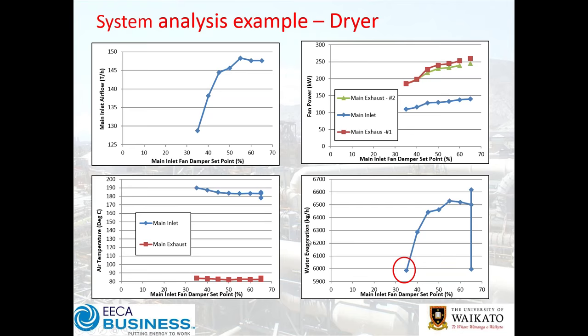The initial set point was 65%. The key driver for the dryer is water evaporation. Starting at around 6 tonnes per hour of water evaporation, we changed a few temperature set points, then with a constant steam valve position, did a series of trials as we changed the airflow and measured the system's capacity. At 35% inlet fan set point with close to a 30% reduction in input fan power, we maintained the same production capacity.